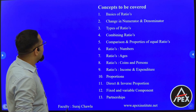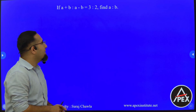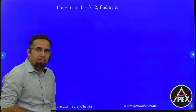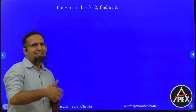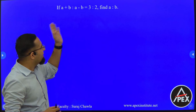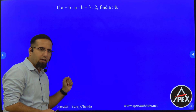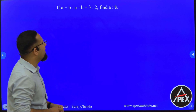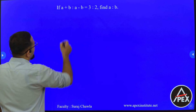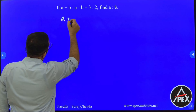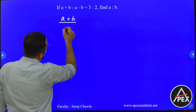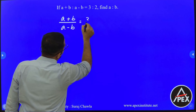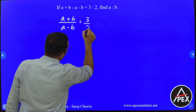We are given: A plus B is to A minus B is equal to 3 is to 2. As we saw in the previous class, if this kind of ratio is given to us, we can directly write it in ratio format. So I write A plus B divided by A minus B, and the value given is 3 is to 2.